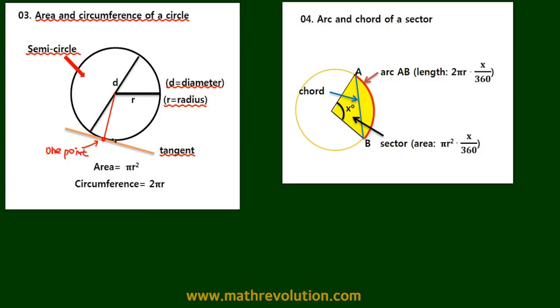Also, the angle this tangent and this line creates will always be 90 degrees. So the area of the circle is πr², and the circumference is 2πr.